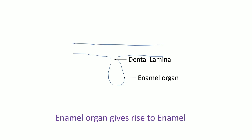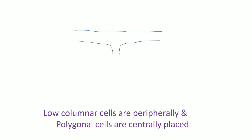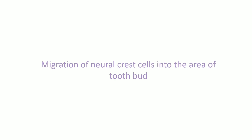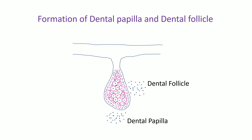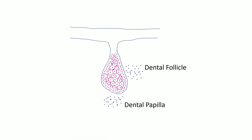Enamel organ gives rise to the enamel, which is the hardest part of the tooth. The cells of the enamel organ are low columnar in the peripheral region and polygonal cells in the central region. Then there is migration of neural crest cells into the area of the tooth bed.